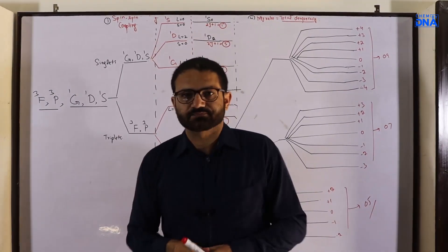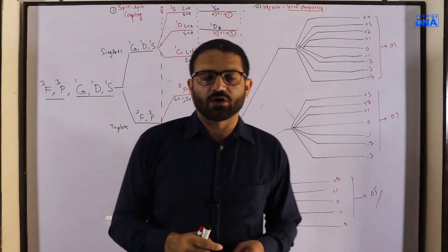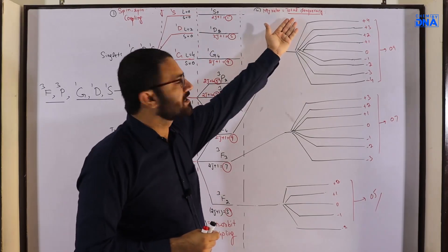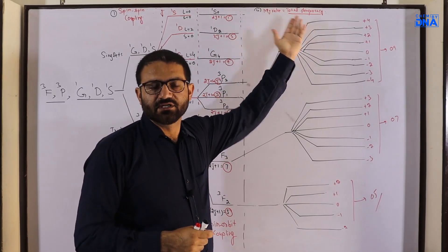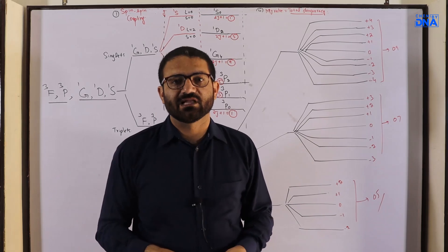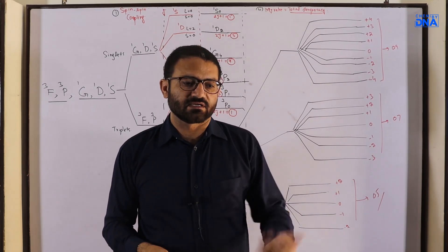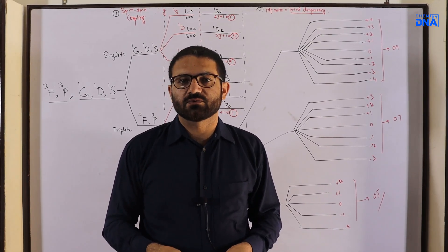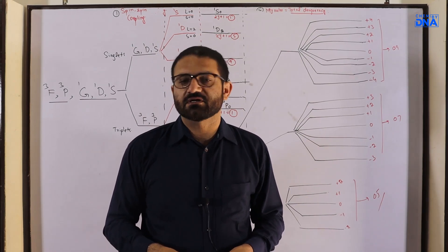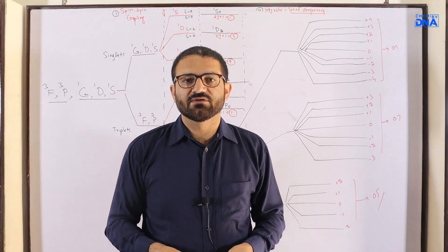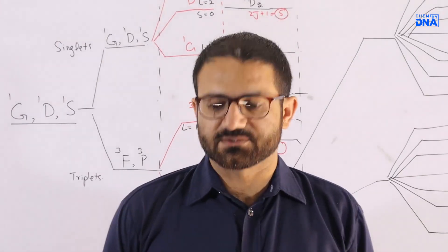This was all about the orbital, or total, degeneracy of the d2 system, which has 45 levels. In the next lecture we will talk about the microstates — what they are and their analysis in various systems. Thank you very much.